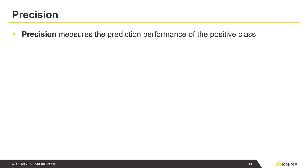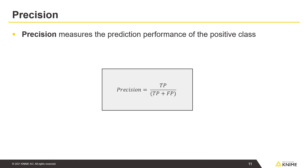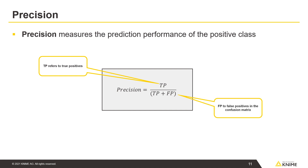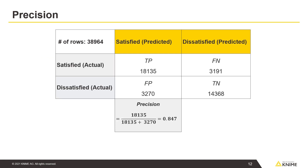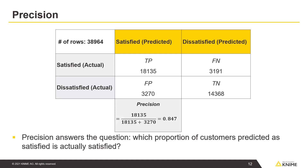Precision measures the prediction performance of the positive class. Precision is calculated with this formula, where TP refers to true positives and FP refers to false positives in the confusion matrix. Precision answers the question: which proportion of customers predicted as satisfied is actually satisfied?